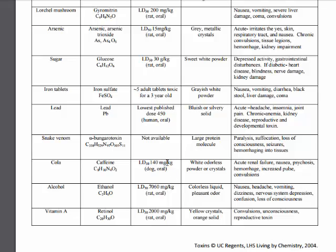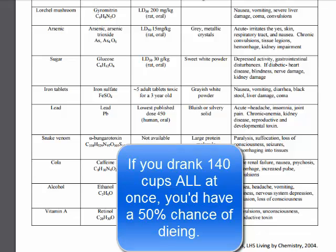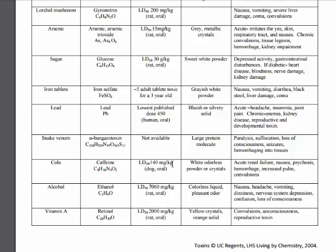Say it was a 1 kilogram rat. If you fed that 1 kilogram rat 140 milligrams, there's a 50% chance that rat will die. If the rat was a 2 kilogram rat, you would need 280 milligrams to achieve that 50% chance. Human beings, like say somebody that's 220 pounds, they would be 100 kilograms. A 100 kilogram human being would require 100 times 140 milligrams.